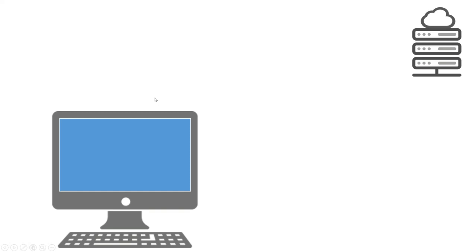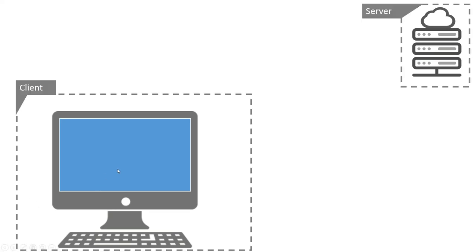To access a website we must have a web browser. A web browser is software that we use to access web pages. I'll install the first one: Opera Mini, another one Google Chrome, Microsoft Edge, Firefox, Safari, and UC Browser. You can install one of these and still use it, but we have installed all of them in the computer that we have.